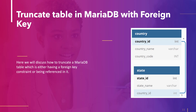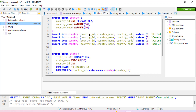Next, we will understand how to truncate a table in MariaDB that either has a foreign key constraint or has been referenced by a foreign key. For illustration we use two tables: the country table and the state table. In the country table, country_id is the primary key, and it has been referenced in the state table. In the state table, state_id is the primary key and country_id is the foreign key.